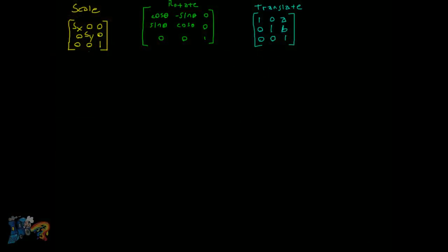Today we're going to do some example problems of taking an object from its model space to its world space by simply coming up with a model-to-world matrix that represents that transformation. I've got the matrices there for reference — these are the ones from the previous video.